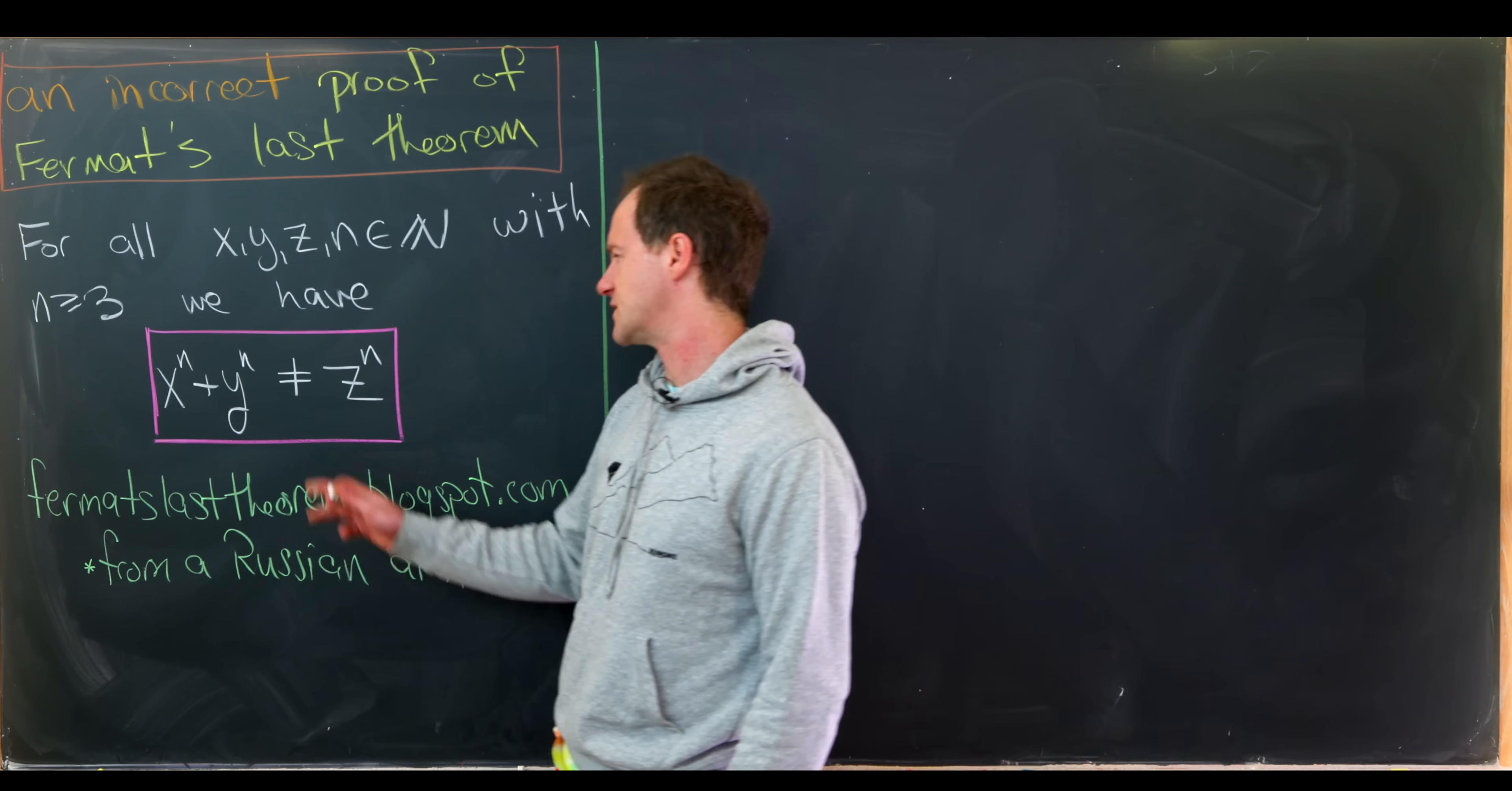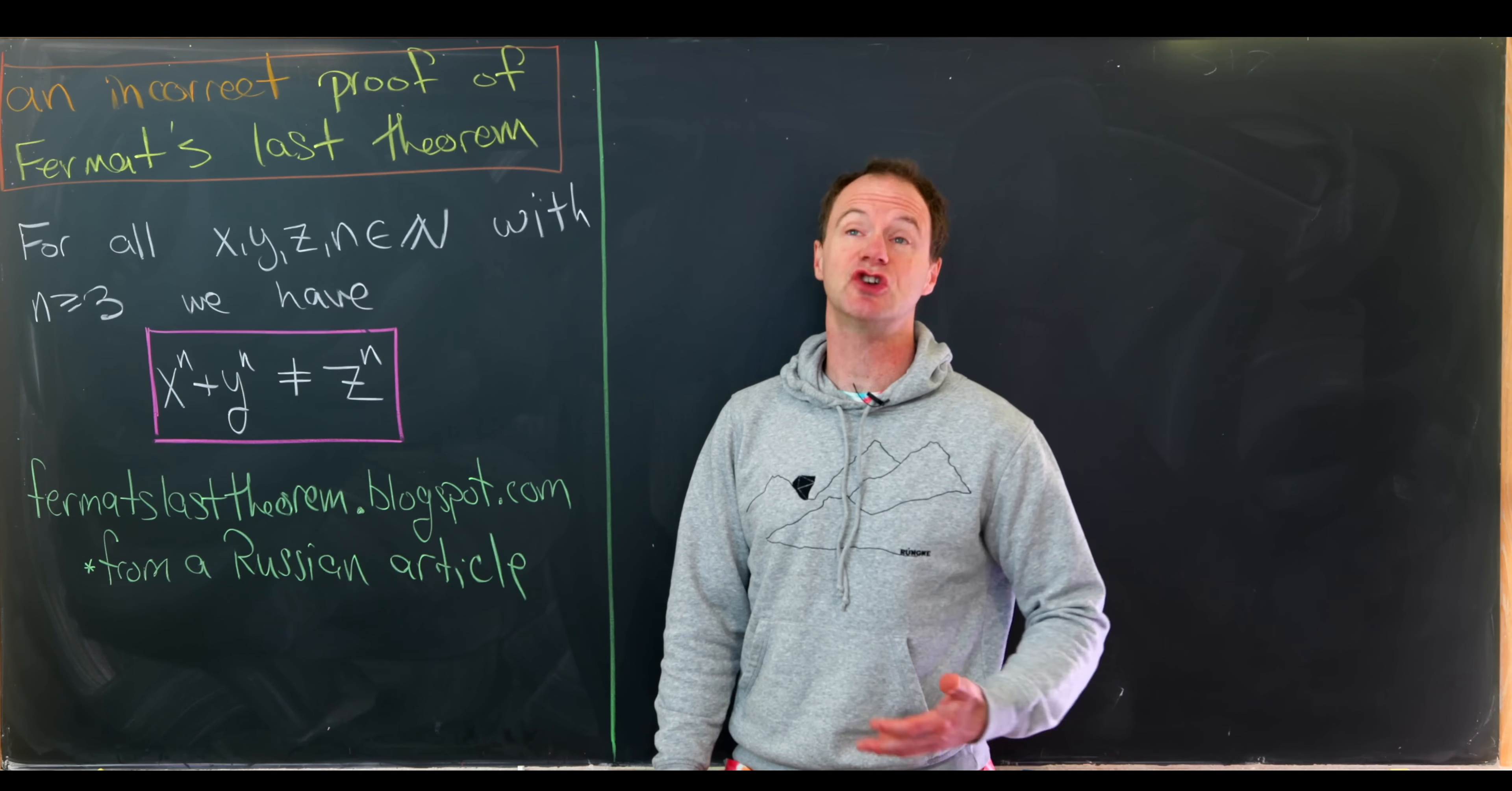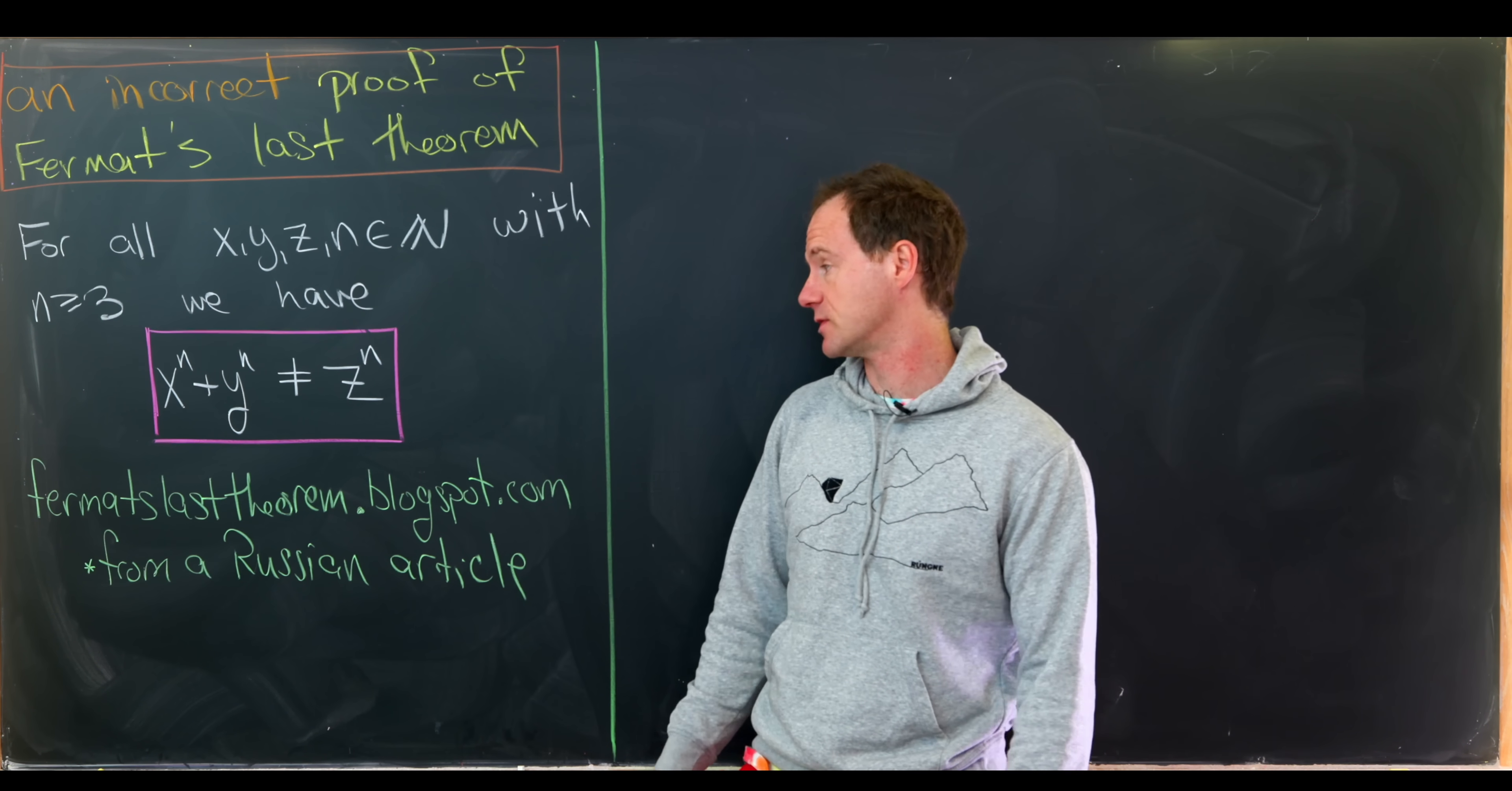In other words, there are no solutions to this object right here if we replace this with an equal sign. Of course, what makes this interesting is that it's so easy to state, and the case when n equals 2 gives us an infinite family of solutions, the Pythagorean triples.